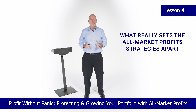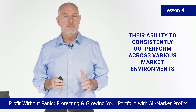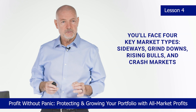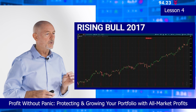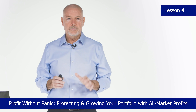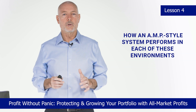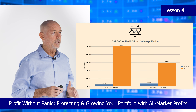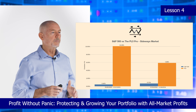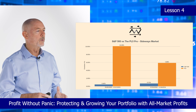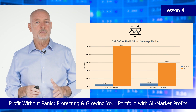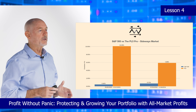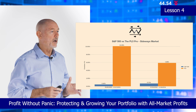Let's discuss what really sets the All Market Profit strategies apart: their ability to consistently outperform across various market environments. As an option seller, you face four key market types. A sideways market occurs when prices fluctuate within a narrow range without a clear trend. An example is the first half of 2015, when the market stayed within a 4% range. During this period, while the S&P 500 barely moved, the AMP strategy gained over 10%, because the AMP thrives in sideways markets due to its non-directional setup and positive theta exposure.